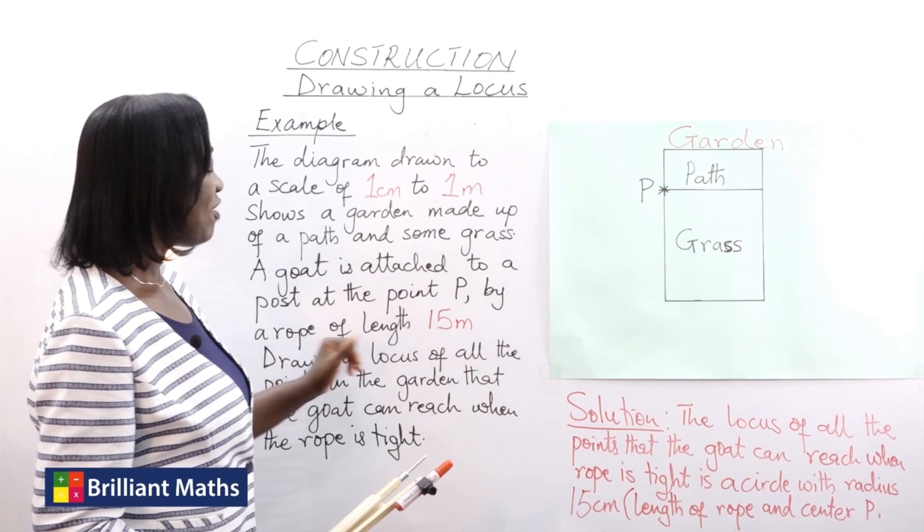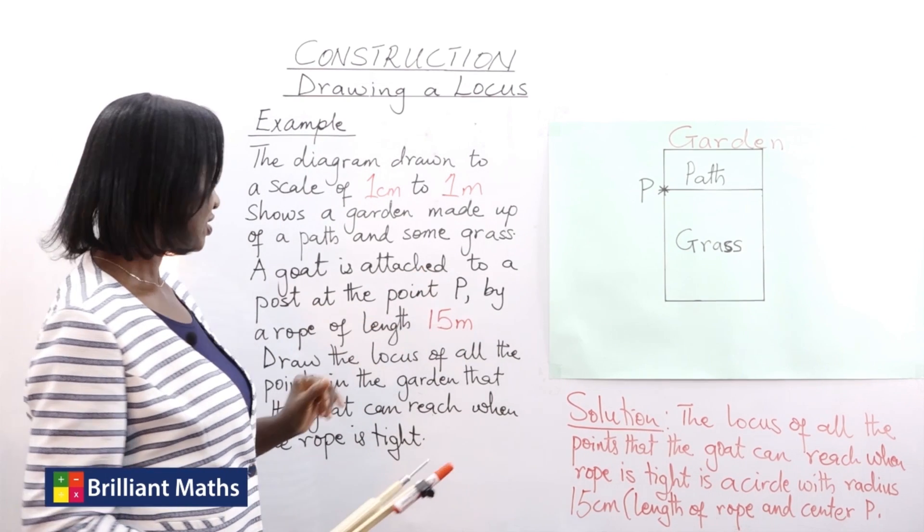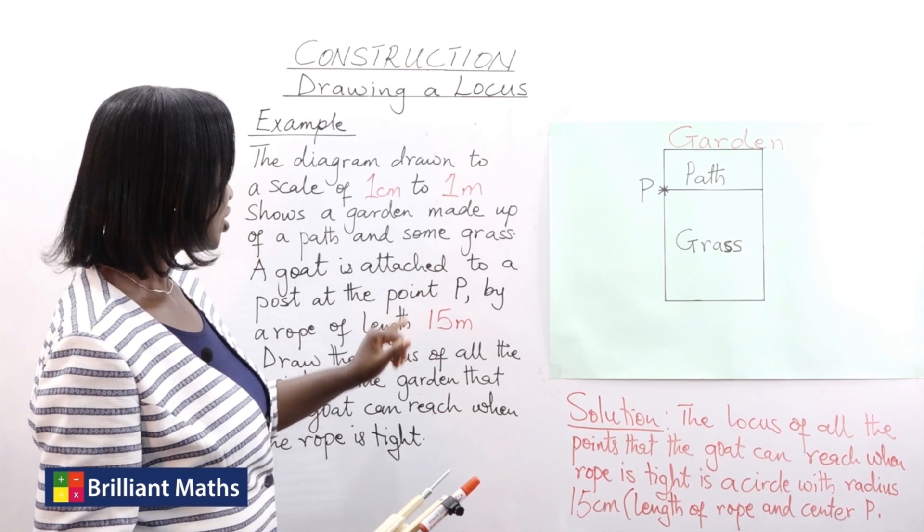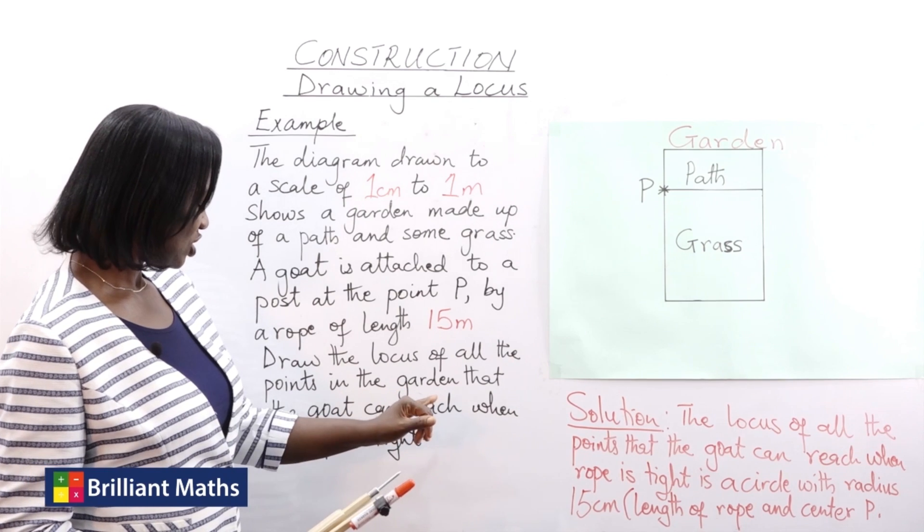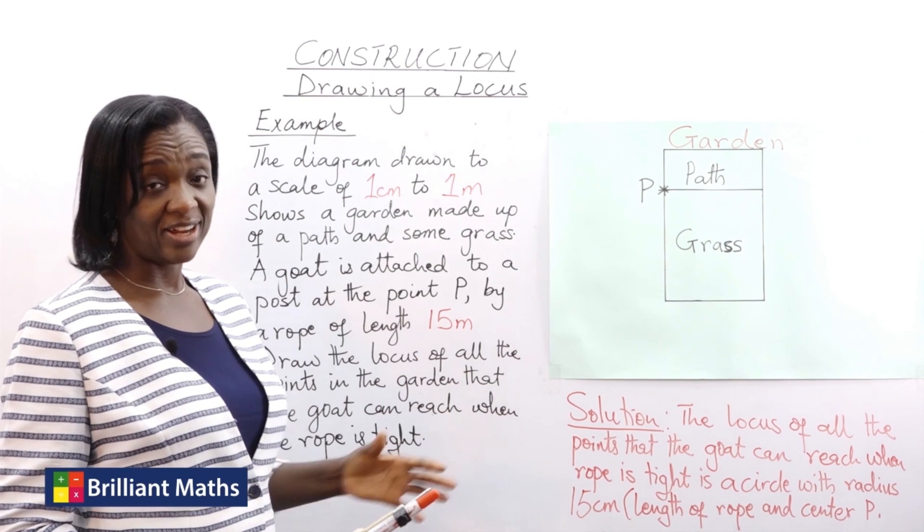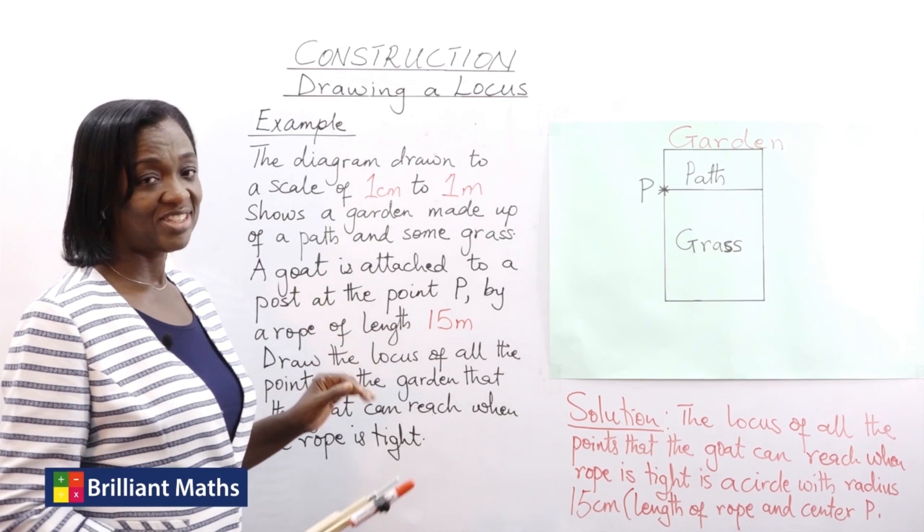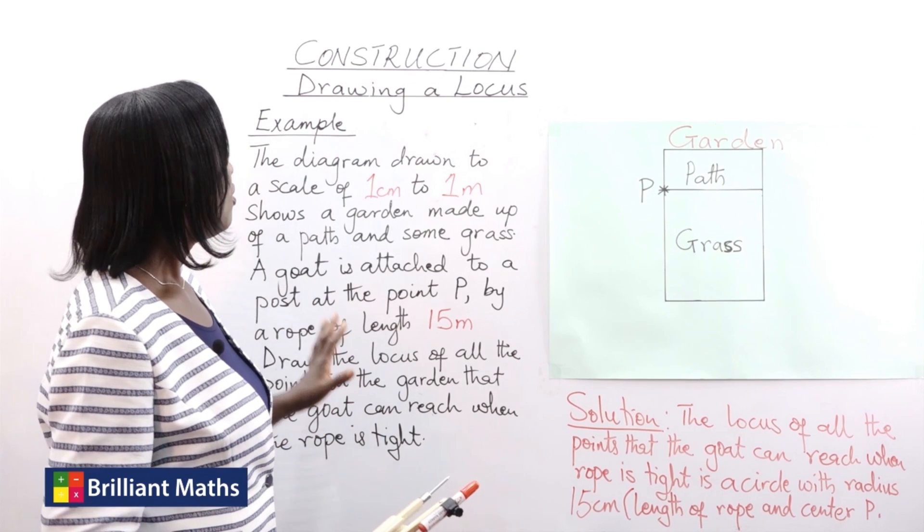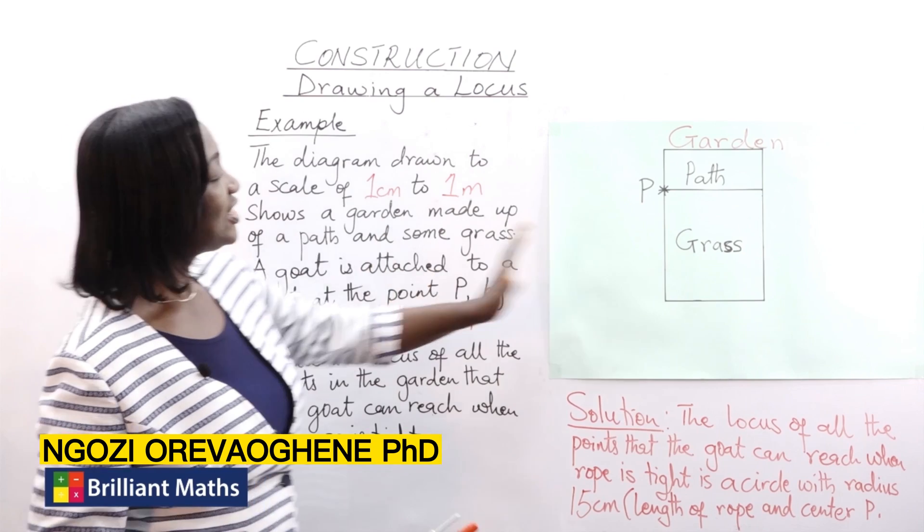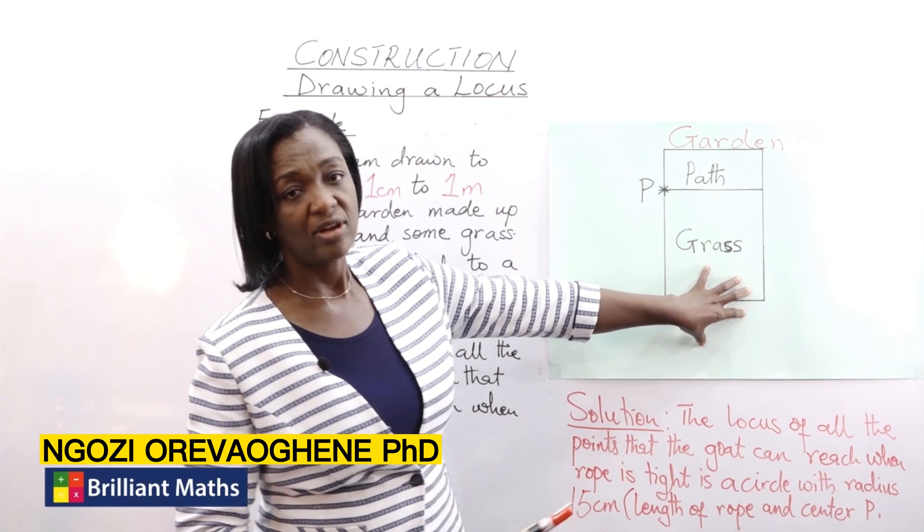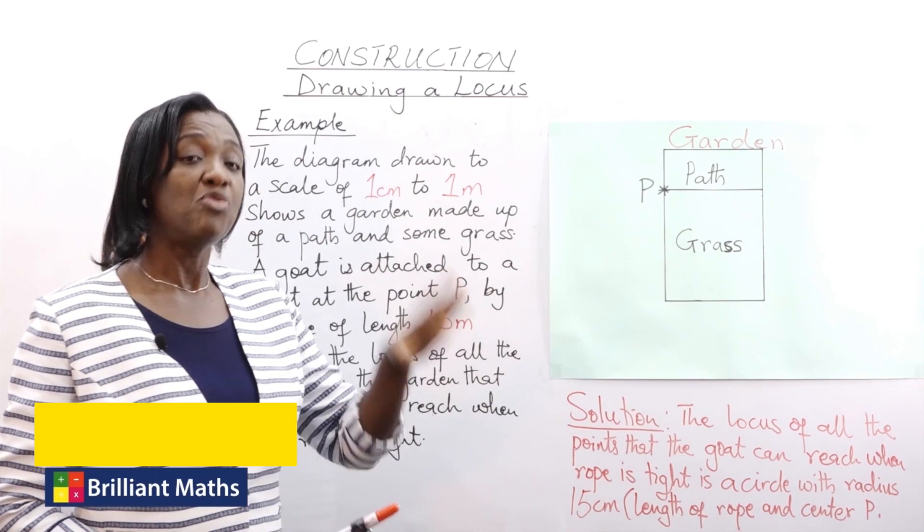by a rope of length 15 meters. Draw the locus of all the points in the garden that the goat can reach when the rope is tight. This is very interesting. So from this question we know that this garden is a scale drawing of a garden in real life.